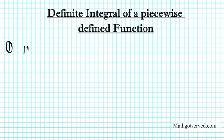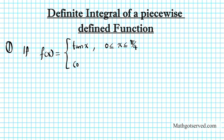So let's go ahead and write down the question. Part one: f of x is a piecewise defined function defined as tan x if x is between 0 and pi over 4, and cotangent x if x is between pi over 4 and pi over 2. Find the definite integral from 0 to pi over 2 of f of x dx.